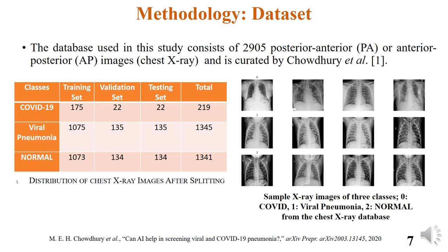The dataset used in this study consists of 2,905 posterior-anterior or anterior-posterior chest x-ray images curated by Chowdhury et al. Among those, 219 images are COVID-19 cases, 1,345 chest x-ray images are viral pneumonia cases, and 1,341 cases are normal x-ray images.